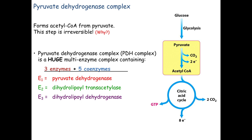Pyruvate has three carbons; the acetyl group we put on CoA only has two carbons, so we must have lost a carbon somewhere. We're going to decarboxylate pyruvate — there's the CO2 leaving. We're also going to oxidize it once; that's the two electrons that are leaving. Oxidation is removal of electrons, and those electrons have to go somewhere. In a redox reaction, something is oxidized but something else is always reduced. Something is going to grab those electrons, and that's going to be NAD becoming NADH, just like back in glycolysis.